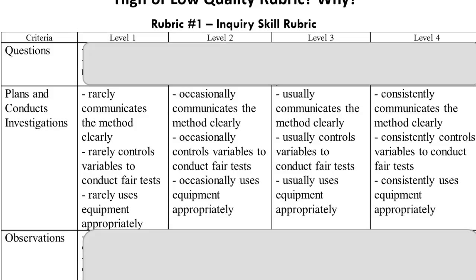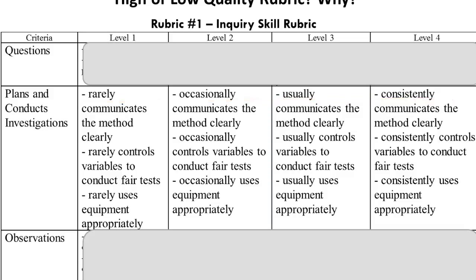Let's look at the second row. Look at the criterion — is this clear? What is missing? What about planning and conducting investigations? Are we looking at quality? Are we looking at procedural accuracy? Are we looking at consistency or frequency? Upon closer inspection, once again, we can see that this rubric has to do with frequency: rarely, occasionally, usually, consistently. Is this a problem? Consider the other descriptor though — not only is the frequency being assessed, but so is the clarity. Is this a problem? So how would you score Stew as it is written?